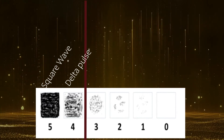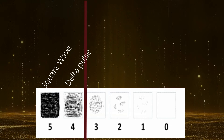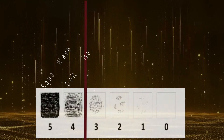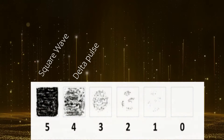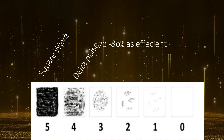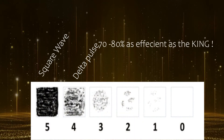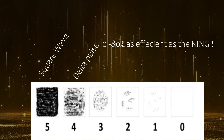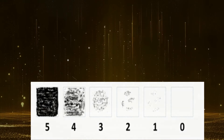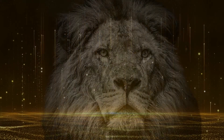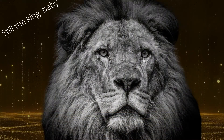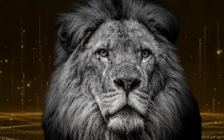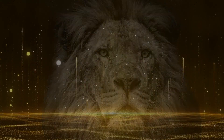Both the delta wave and the square wave were grouped together — they consistently increased the cell colony. The effectiveness of the delta wave was estimated to be about 70 to 80 percent as effective as the square wave. So yes, spoiler alert: the square wave won this round. Now let's investigate the other waveforms.